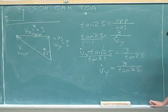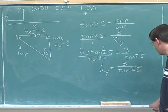So we're going to have to do 3 divided by tangent of 25. We can do that in one step on our calculator. That comes out to be 6.4.